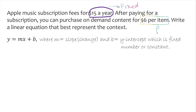So we can write y = m, where m in this case is $6 — the changeable part — times x, which is the number of items we don't know, plus b, which is the fixed cost of $15. So that is the linear equation. We call it linear because x has a power of 1, degree 1. So y = 6x + 15 in this context.